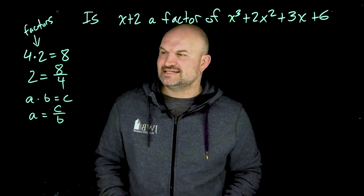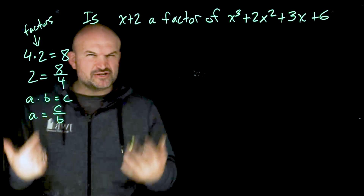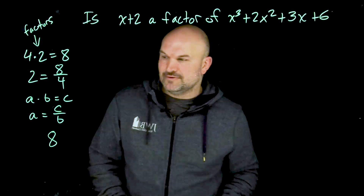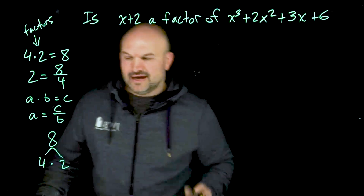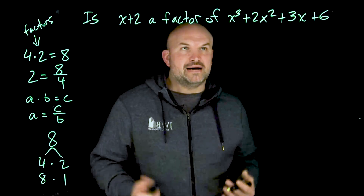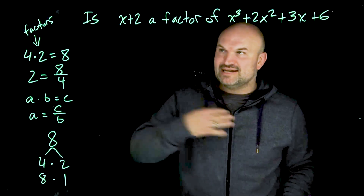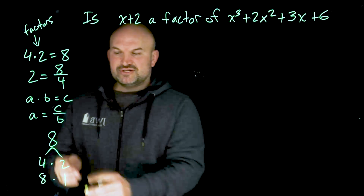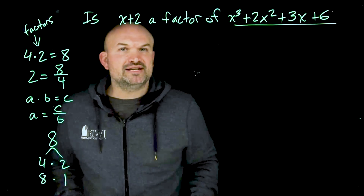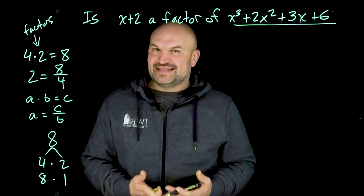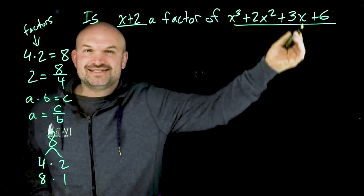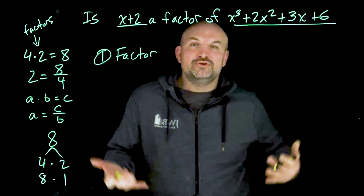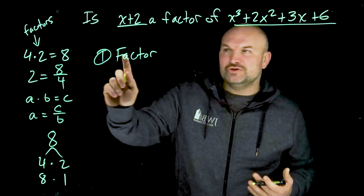When we first learn about factors of numbers, we look at creating a factor tree. For example, the factors of 8 are 4 and 2, but also 8 and 1. Now, for our polynomial x cubed plus 2x squared plus 3x plus 6, I want to give you three ways to identify if x plus 2 is a factor. The first way is like what we did with numbers — breaking a number apart into its factors. So we take this polynomial and factor it, if it is factorable.